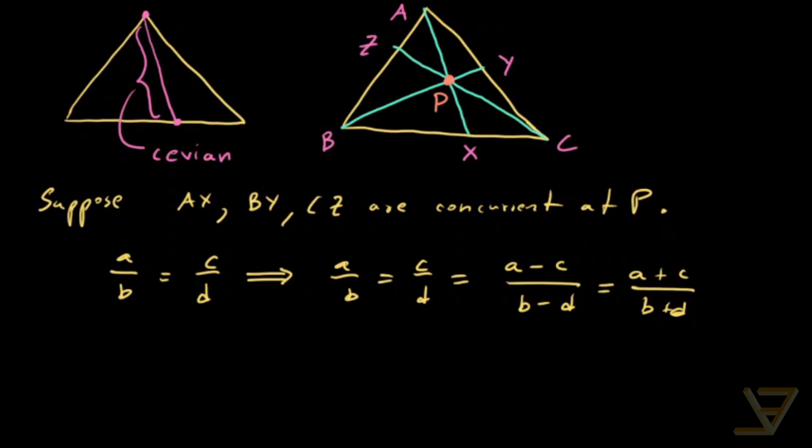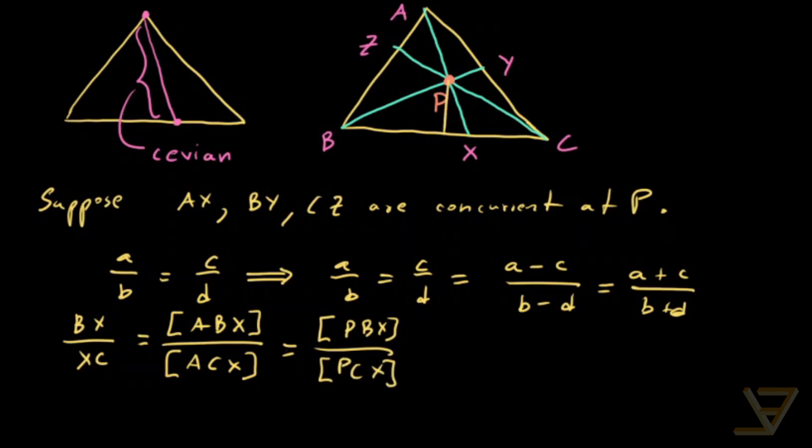So when we use this, we get the following result. Because BX and triangles ABX and ACX share a height, BX over XC is equal to the area of ABX over the area of ACX. And that is also equal to the area of PBX over the area of PCX. Because there's a common height for those triangles here.